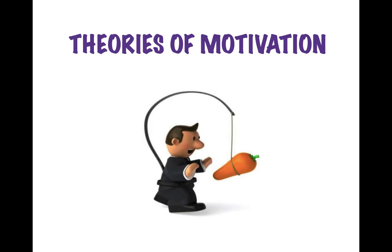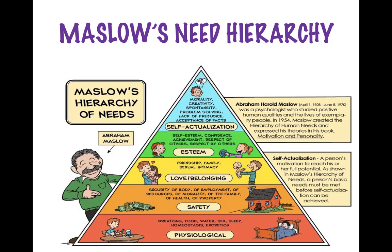Now let's move on to the various theories of motivation. The first and foremost theory was given by Abraham Maslow, a psychologist who studied positive human qualities and the lives of exemplary people. In 1954, Maslow created the hierarchy of human needs and expressed his theories in his book, Motivation and Personality. He gave a pyramidal structure in which the basic level consists of physiological needs, including breathing, food, water, sex, sleep, homeostasis, and excretion — the basic needs required for survival.